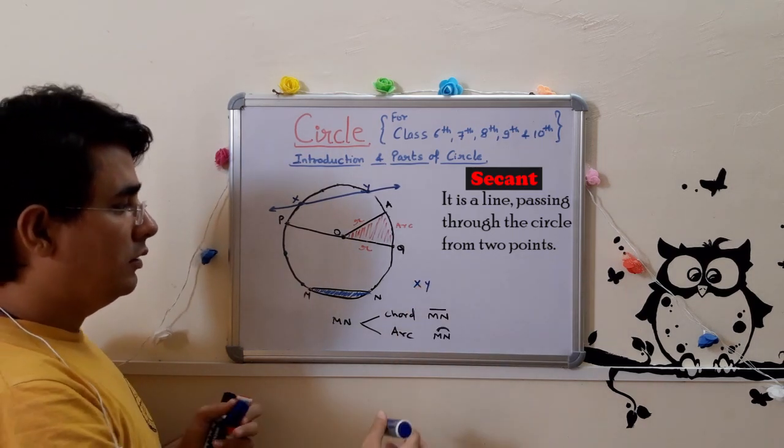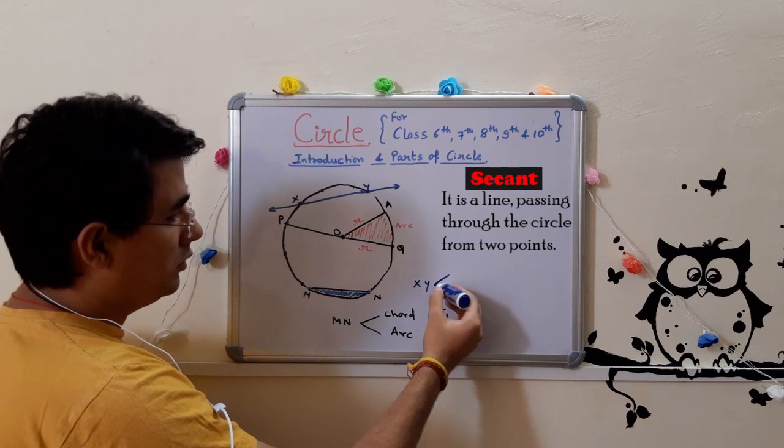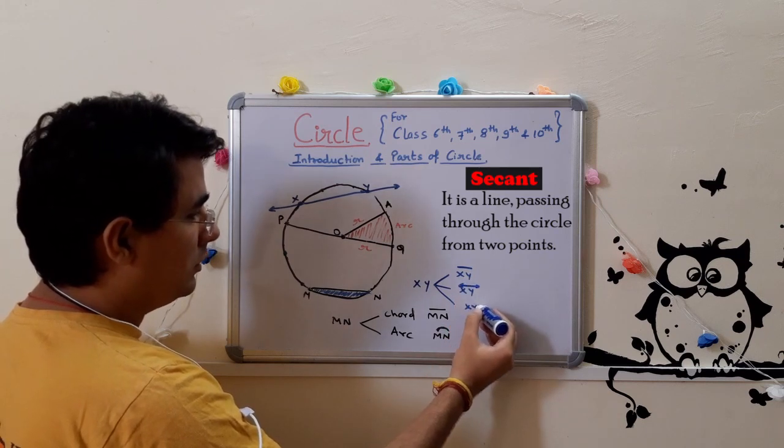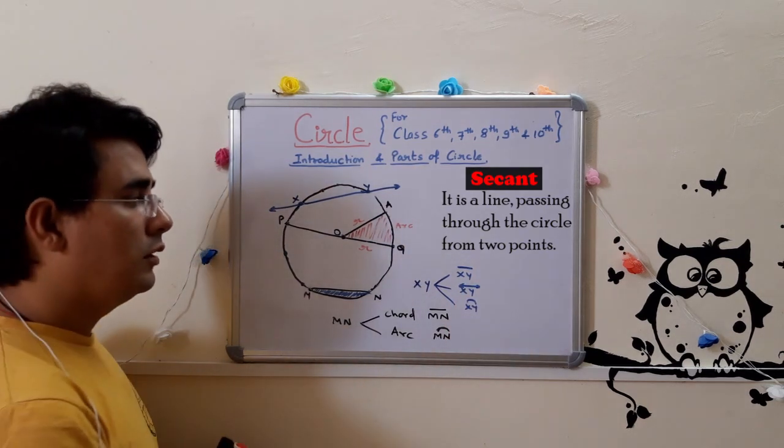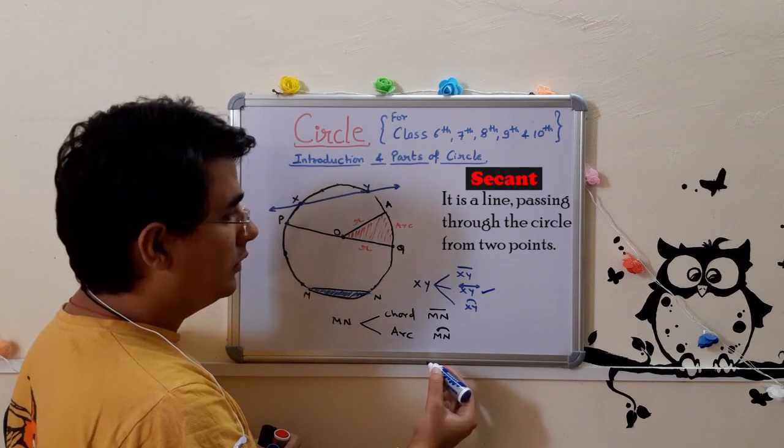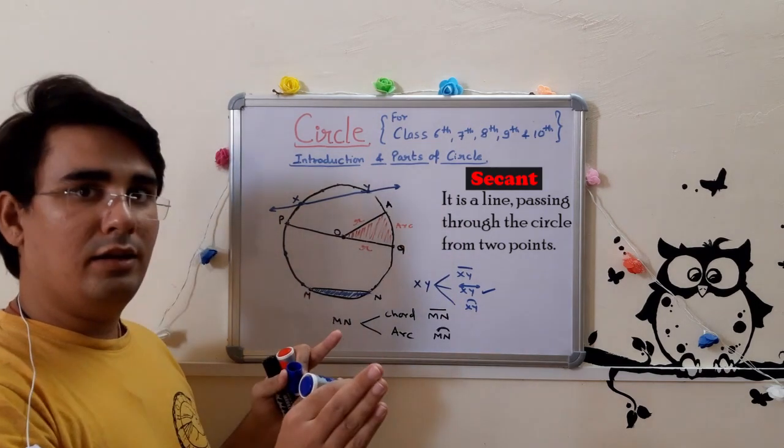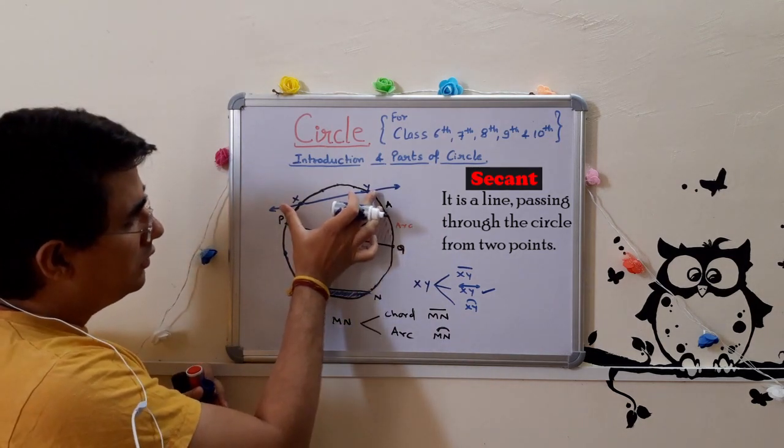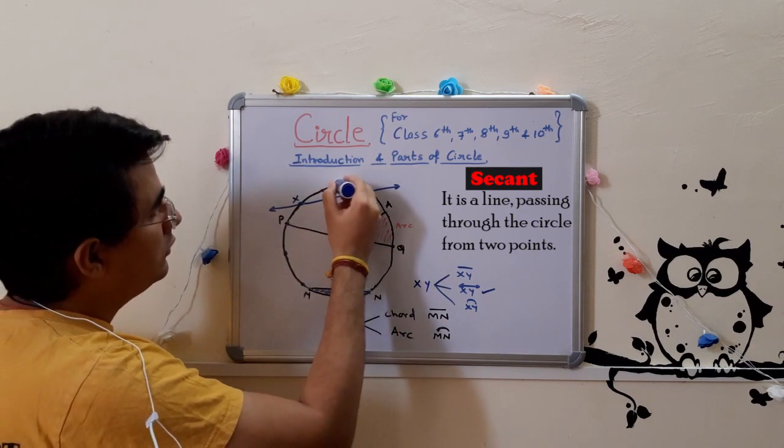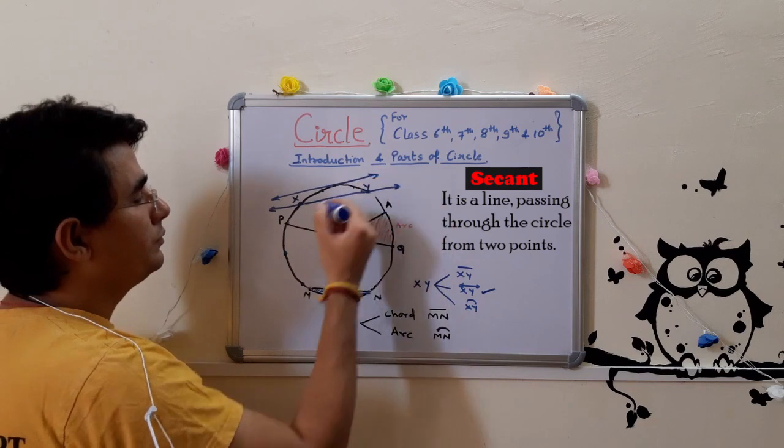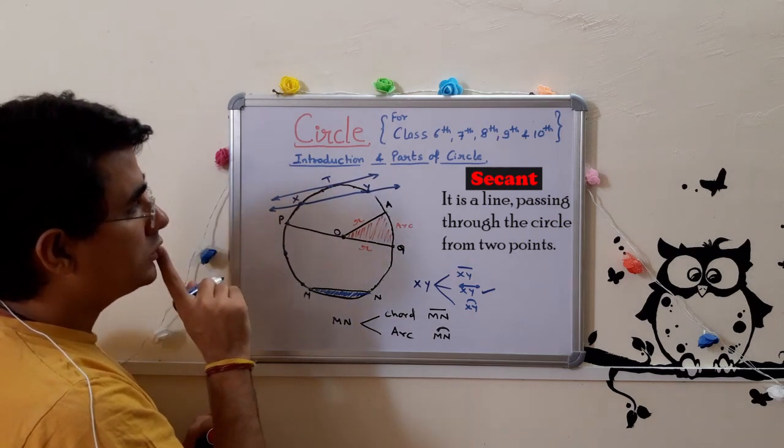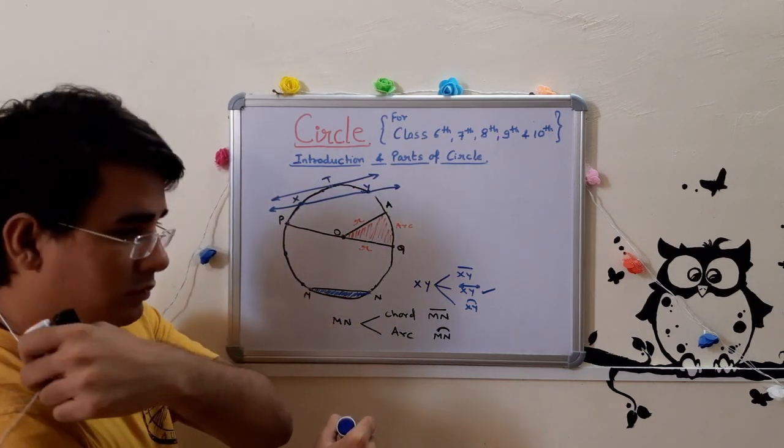Now here are three options. If I say line segment xy, then you will know it's a chord. If I say line xy, then it's a secant. Then again you will notice the line section. This is a line secant passing through the circle at two points.